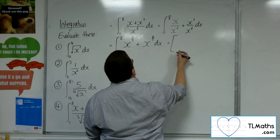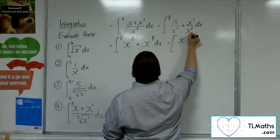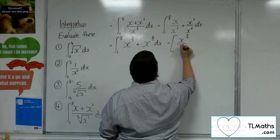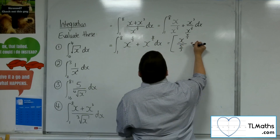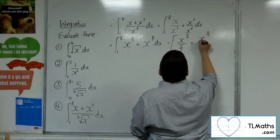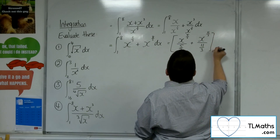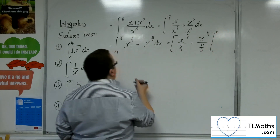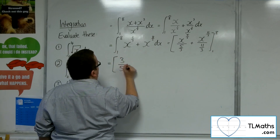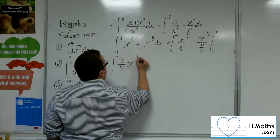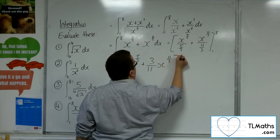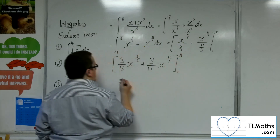Now I can add one to the power. Two thirds plus one is five thirds — divide by the new power. Eight thirds plus one is eleven thirds — divide by the new power. So if I rewrite that, I'm going to have three fifths x to the five thirds plus three elevenths x to the eleven thirds, evaluated between one and eight.